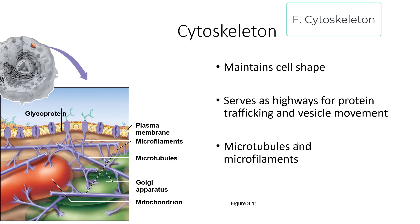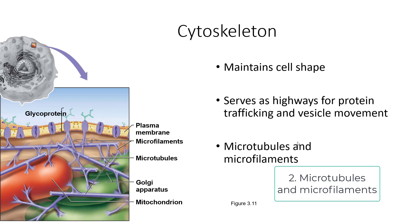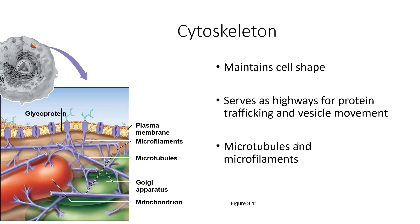The cytoskeleton maintains a cell's shape. It is made of various microtubules and microfilaments — proteins assembled to serve as highways for protein trafficking and vesicle movement. Vesicles don't simply drift around hoping to reach the right place; they travel on these microtubules and microfilaments to their destination. Some are anchored to the cell membrane through integral or peripheral proteins.